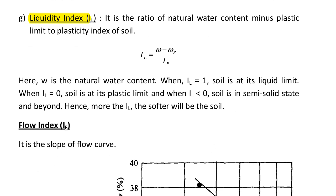When liquidity index IL equals 1, the soil is at its liquid limit. When liquidity index IL equals 0, the soil is at its plastic limit. When liquidity index IL is less than 0, the soil is in semi-solid state.